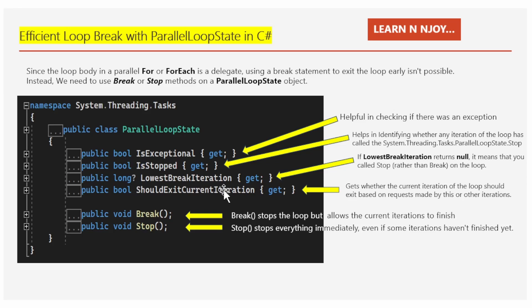Now for the methods. BreakMethod stops the loop but allows the current iteration to finish. Whereas StopMethod stops everything immediately, even if some iterations haven't finished yet. We have now seen the structure of the ParallelLoopState class — four properties and two methods — which we are going to utilize in order to break out of the loop efficiently.